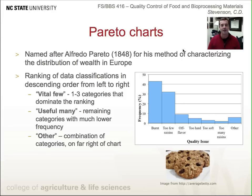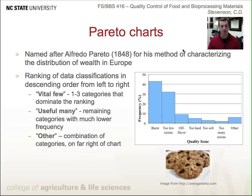There are three concepts to keep in mind with this chart. The first is the concept of the vital few — categories that dominate the ranking. In this case, it's burnt cookies and cookies with too few raisins; those clearly rise above the rest. Next we have the useful many — those that don't come close to the vital few in frequency, but if you started stacking them up they would add up. These could be cookies with bad off-flavors, wrong texture, or too many raisins.